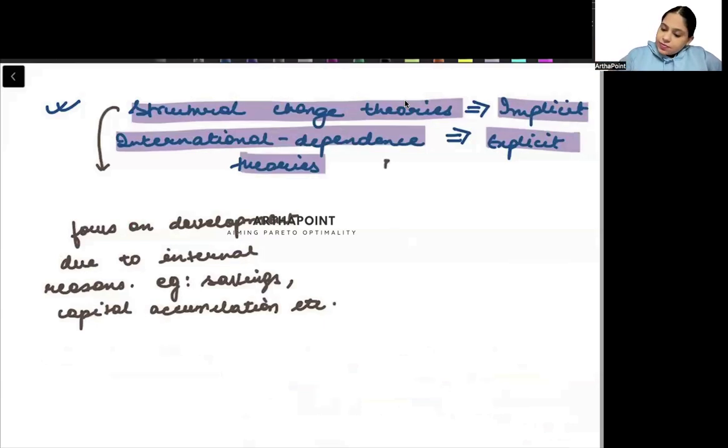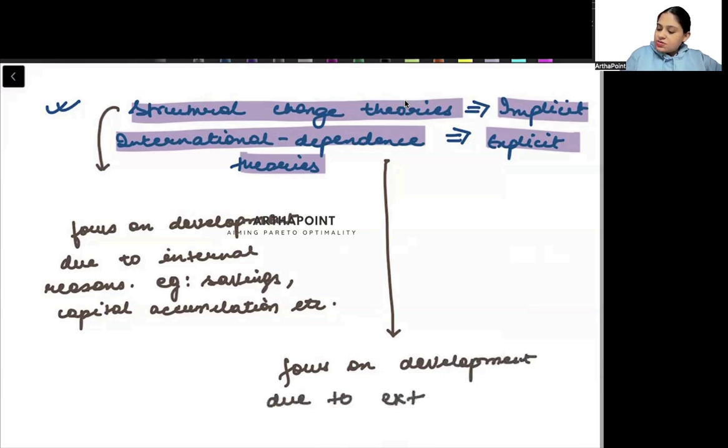International dependence theories—these theories are explicit theories. Explicit theories, those theories which focus on the reason for development according to them is due to external reasons.